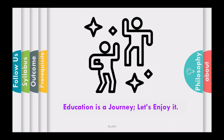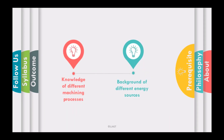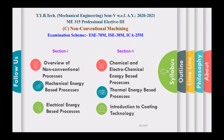Now let us discuss the prerequisites for our course. Students should have knowledge of different machining processes such as traditional machining processes — turning, milling, drilling, grinding, etc. Also, students should have a sound background of different energy sources like thermal, electrical, mechanical, and chemical energies, as this is essential for the completion of this course.